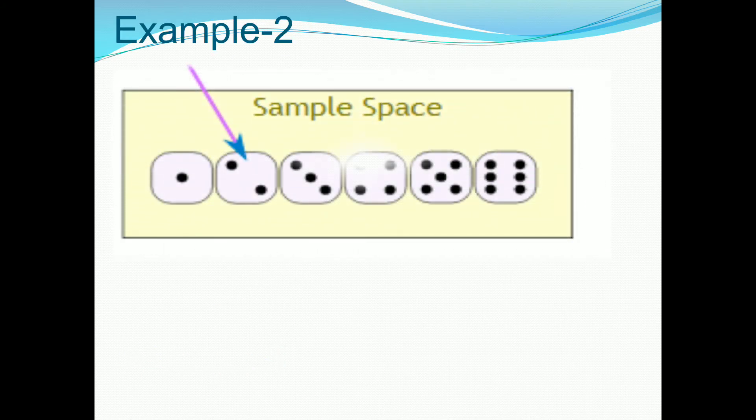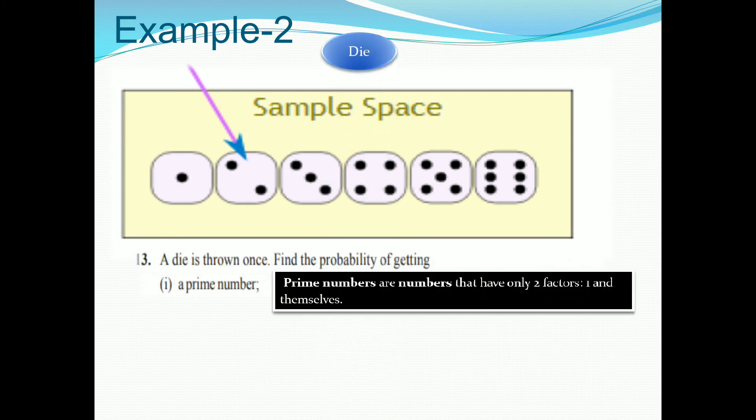Second example. Same dice. This question is taken from the textbook. See students, a dice is thrown once. Find the probability of getting a prime number. First of all, we should know about prime number.